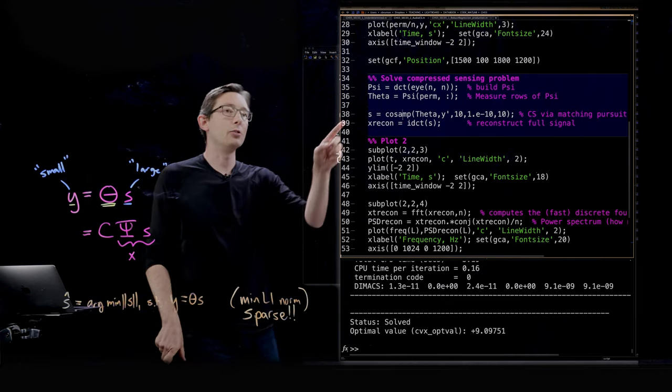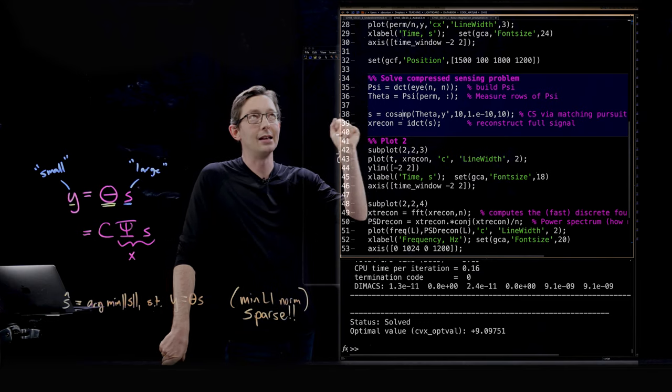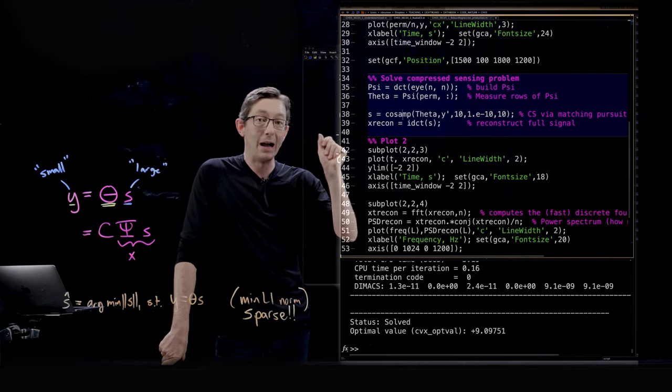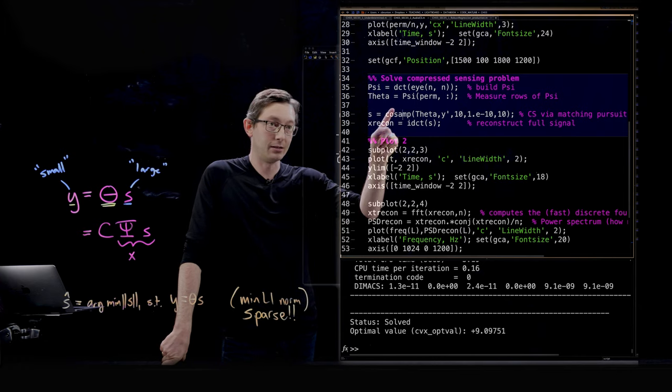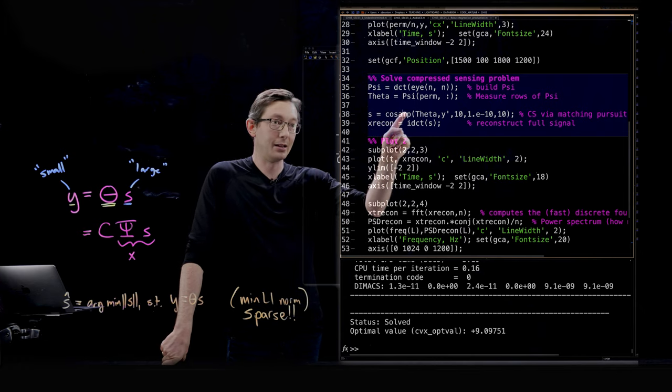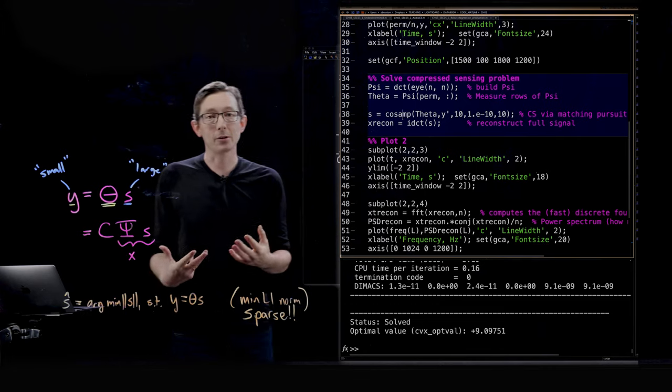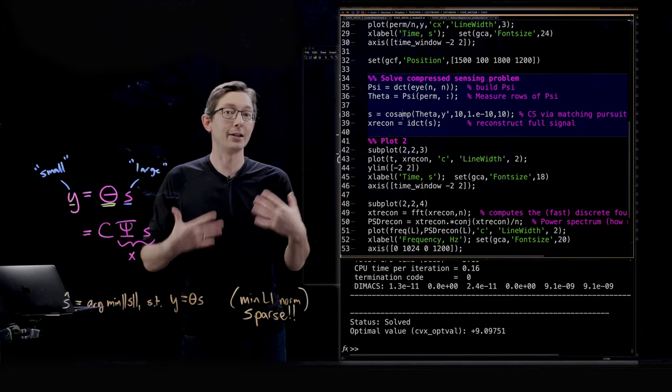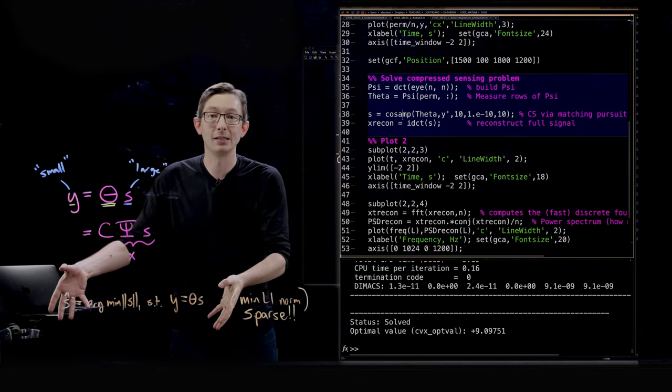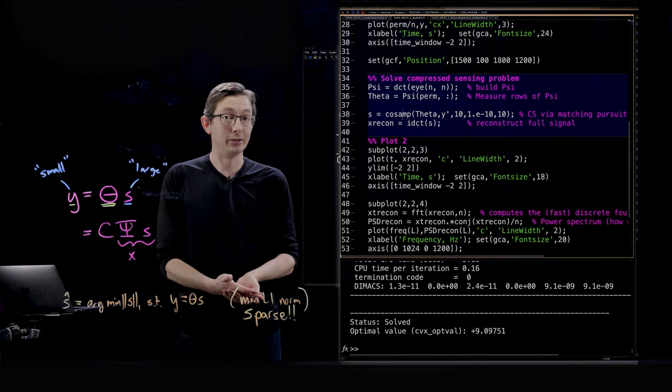Here we're using the CoSAMP code. This is compressed sampling by matching pursuit, that's the compressed sampling matching pursuit. Matching pursuit is basically a greedy algorithm that allows you to solve this kind of an optimization very very fast and very effectively.